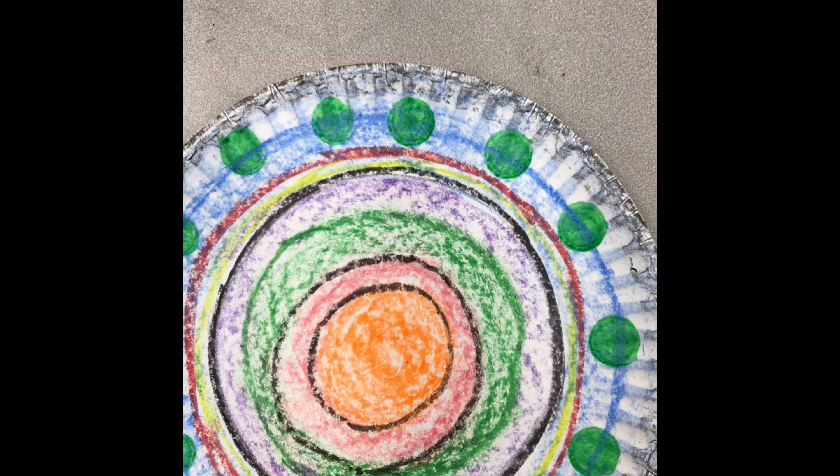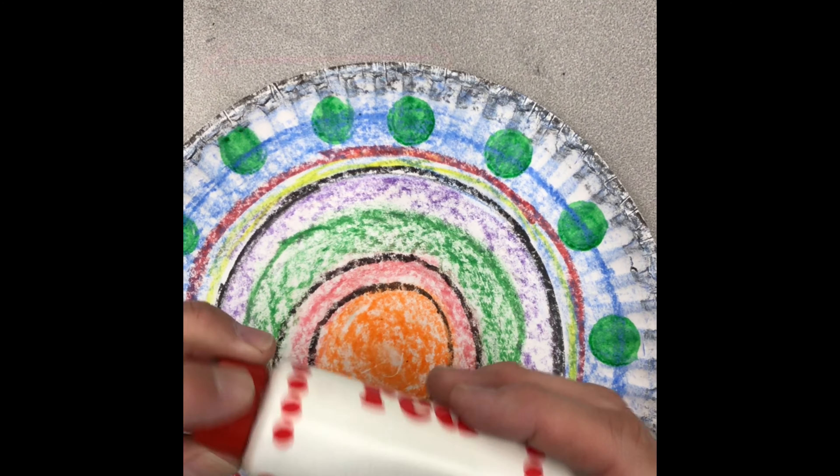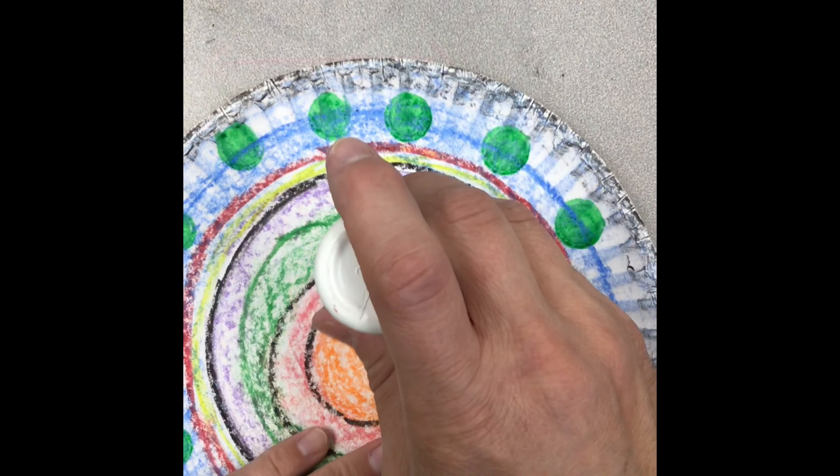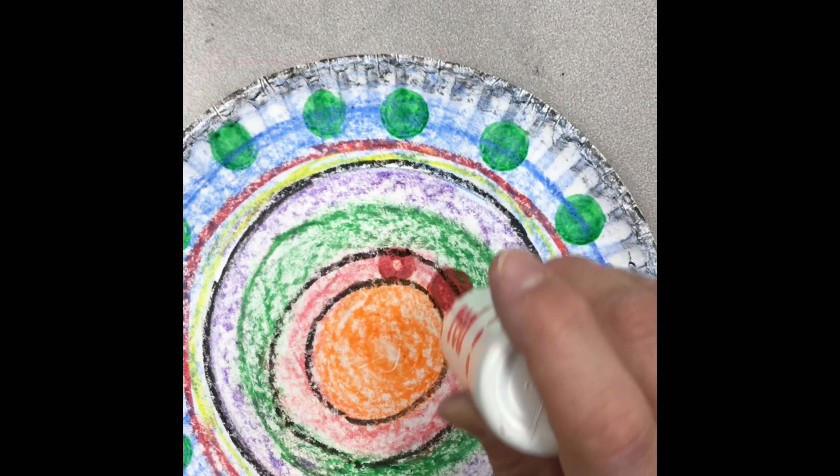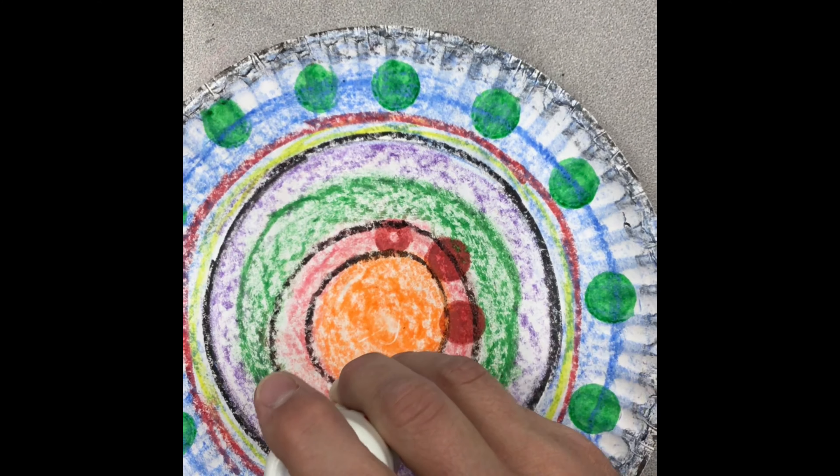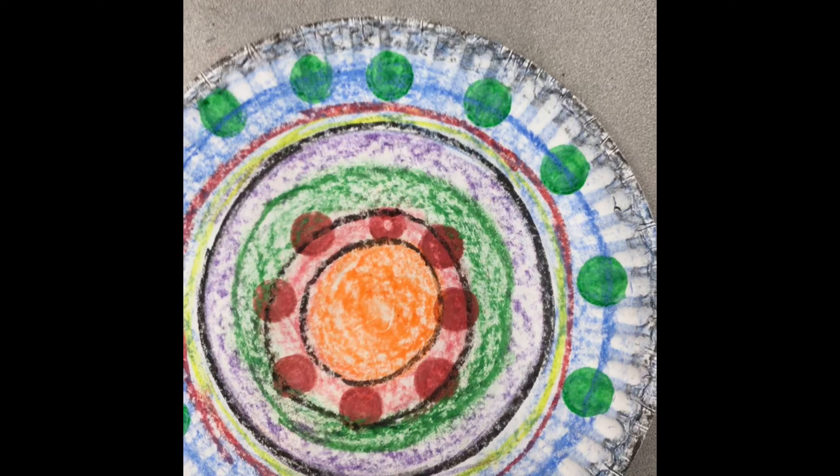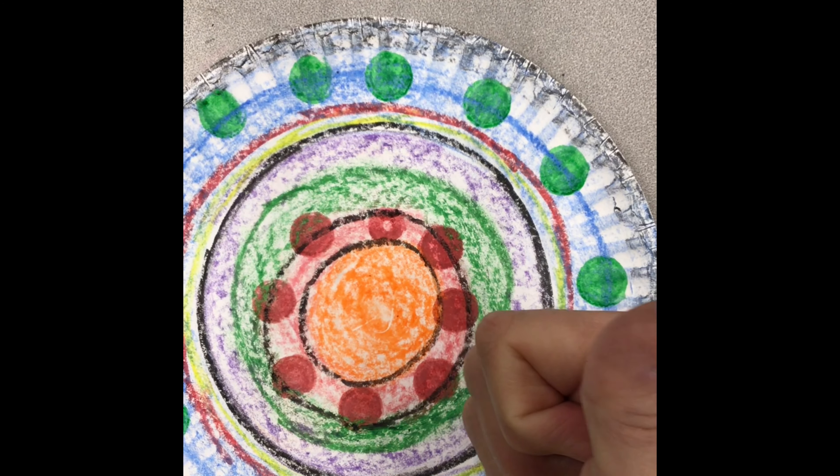So now I'm going to choose a second color and I'm going to add some more circles into the center of my paper plate. So I've got some red here. And if your bingo dauber doesn't work right away, just give another push on it and see if it doesn't start to make the dot. So I've got my red circles there inside of that center area.